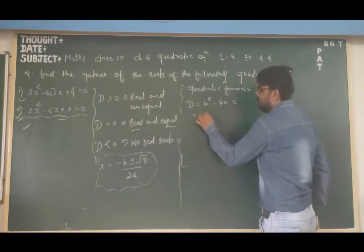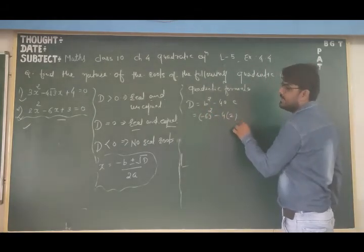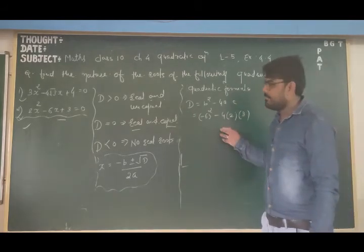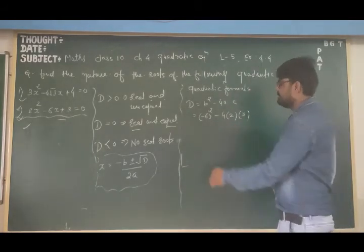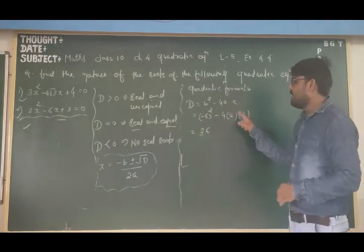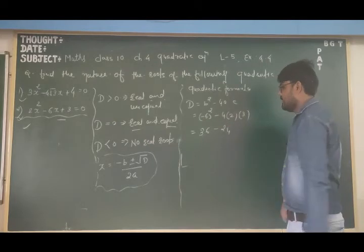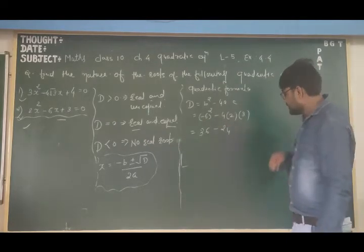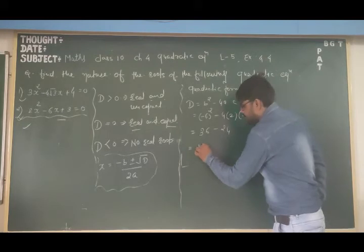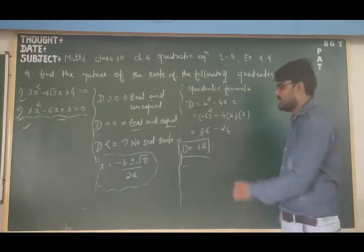So D equals (minus 6)² minus 4 times 2 times 3. That gives 36 minus 24, which equals 12. D equals 12, and since 12 is greater than zero, the roots of this quadratic equation are real and unequal. So we need to find both roots separately.